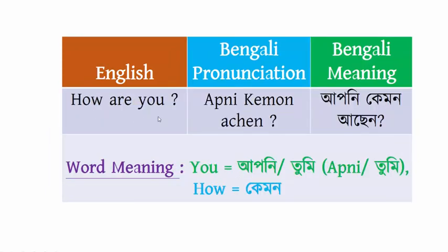How are you? In Bengali, how are you means apni kemon achen. Here, you means apni or tumi. Whether you say apni or tumi depends on the depth of the relation — apni is formal and tumi is informal. And how means kemon. So, how are you? — apni kemon achen.